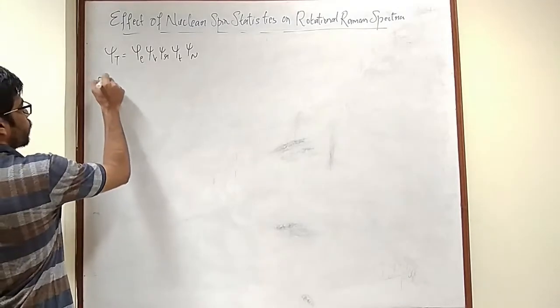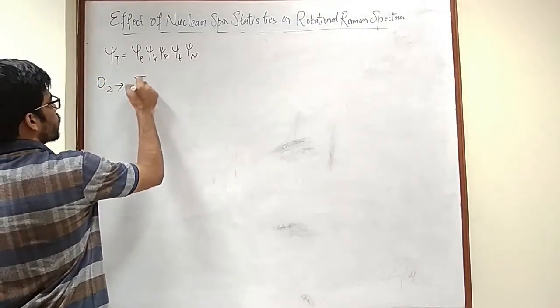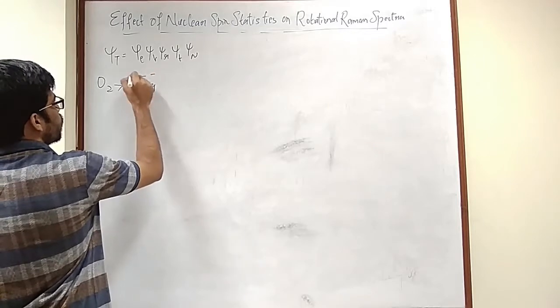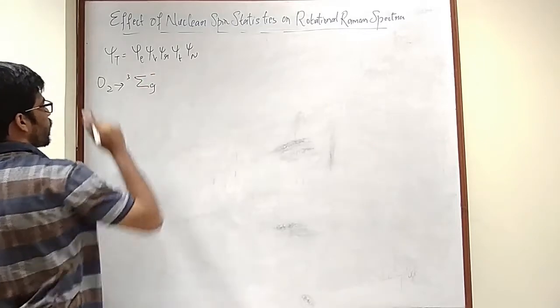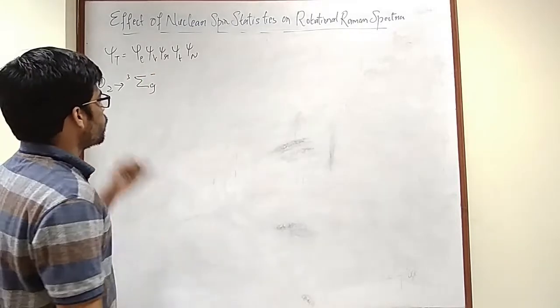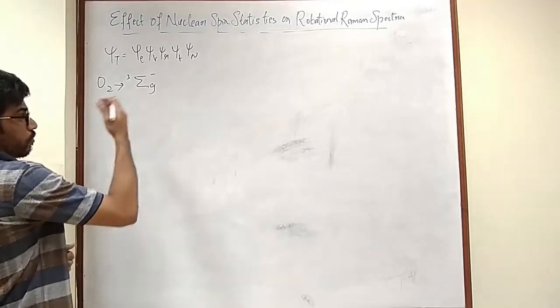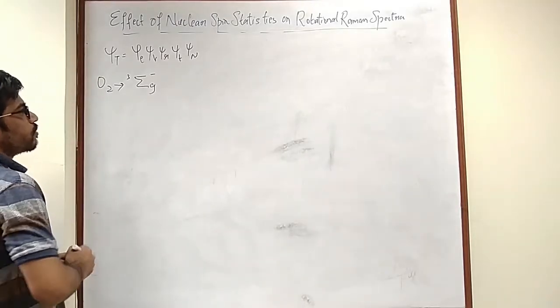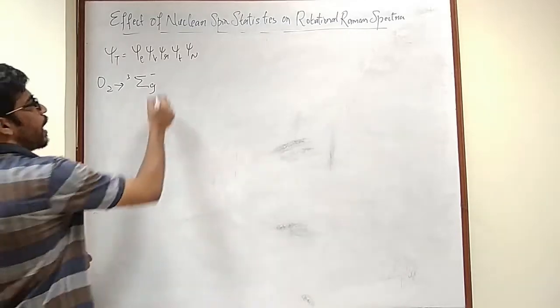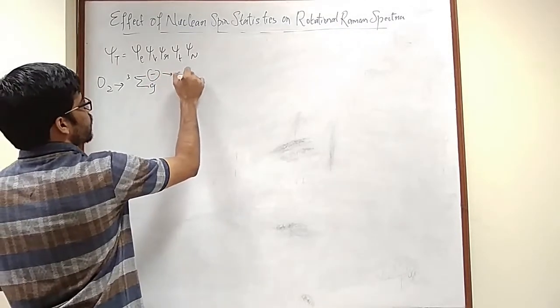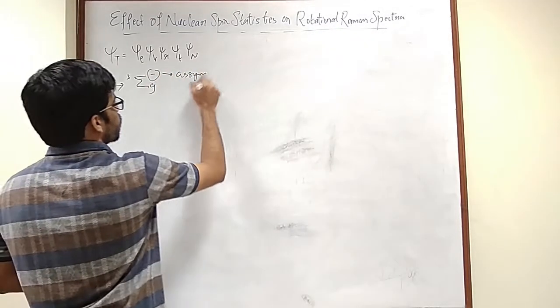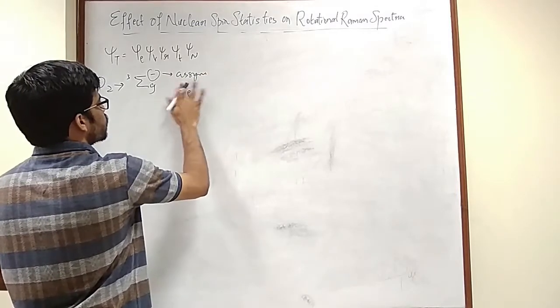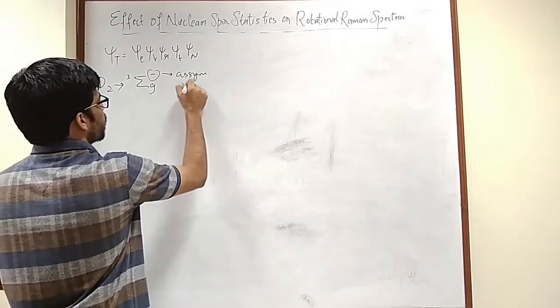So let's say for example O2, which has a term symbol, I think it's sigma-3. So it has a molecular term symbol sigma-3 sigma-g negative, and if this is negative that means the electronic wave function is asymmetric.